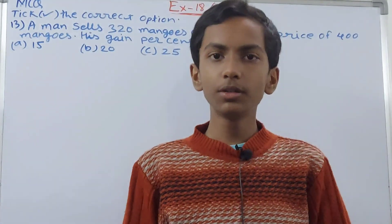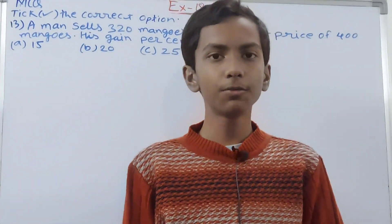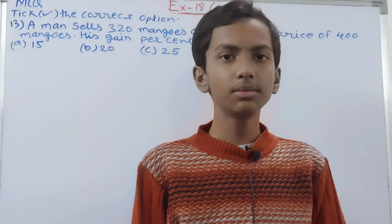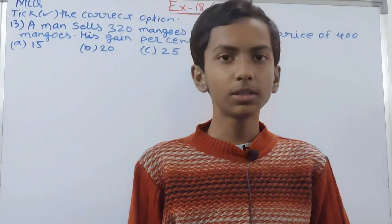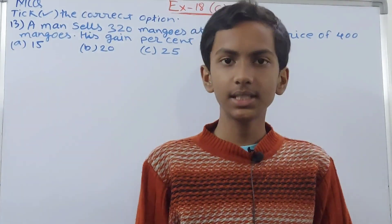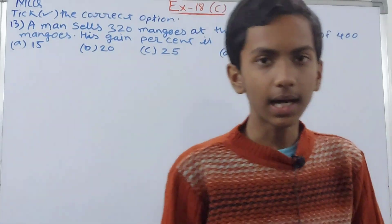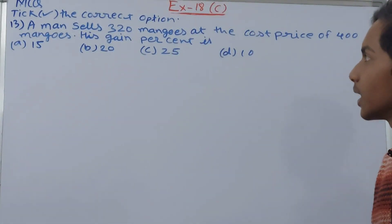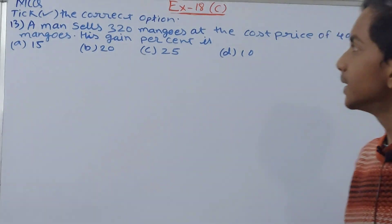Hello friends, welcome back to my YouTube channel 'Doc Your Learning'. In this video we are going to solve ICSE Mathematics Class 7, Chapter 18: Percentage and its Applications, Exercise 18C, Question Number 13. It is an MCQ question — it says: a man sells 320 mangoes at the cost price of 400 mangoes. His gain percent is?